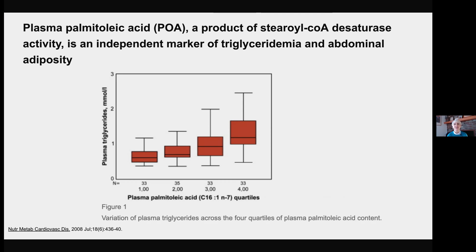So if we have high levels of stearoyl-CoA desaturase activity, we've got to start thinking things may be concerning, even if someone has a normal blood sugar. Because so many times these things are missed — people can still have normal blood sugars. It's going to be really important, number one, that we make everyone aware that a normal blood sugar doesn't mean that you are healthy. But number two, what are some easy markers that we can check to know that we're headed for trouble, even before blood sugar goes up?